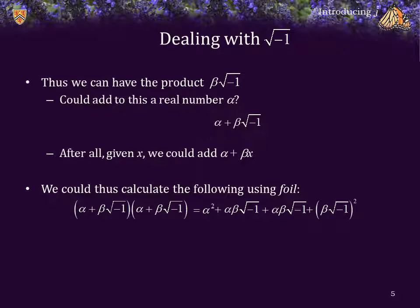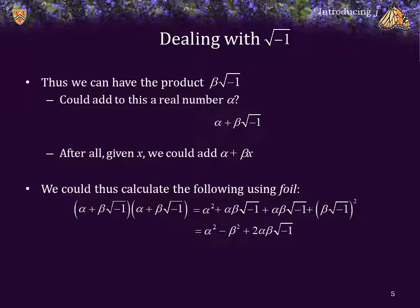Now, the second and third terms are identical, and beta times the square root of negative 1 squared is just beta squared times the square root of negative 1 squared, but the square root of negative 1 squared is negative 1. So what we get is alpha squared plus negative beta squared, because we negated the beta squared since the square root of negative 1 squared was negative 1. And to this, we add 2 times alpha beta times the square root of negative 1. This is more or less the same as what you saw in secondary school.